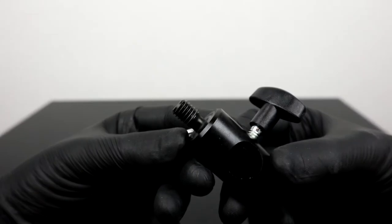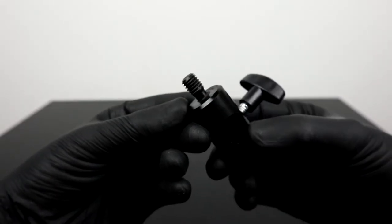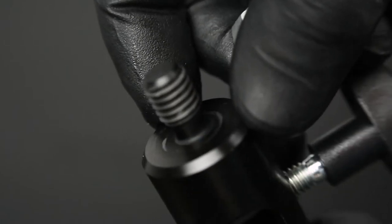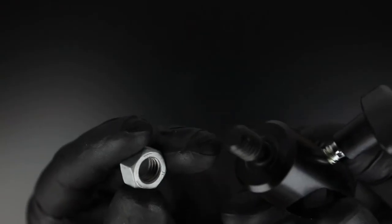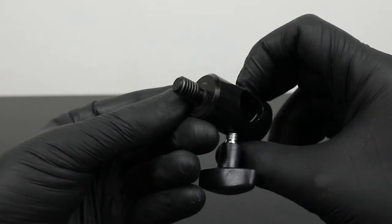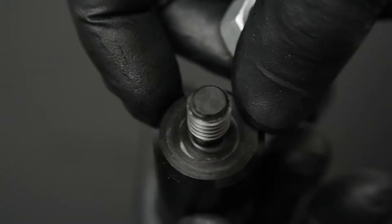If we now take a closer look at the thread we can see the production lines. It is therefore fairly safe to say that the part is made from a solid material. It is therefore not cheap die casting but a CNC produced part.